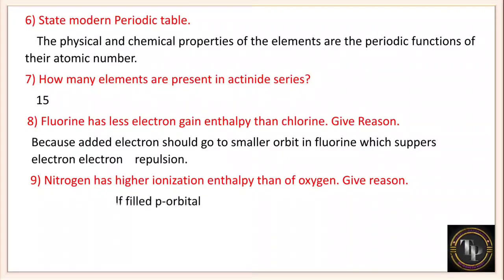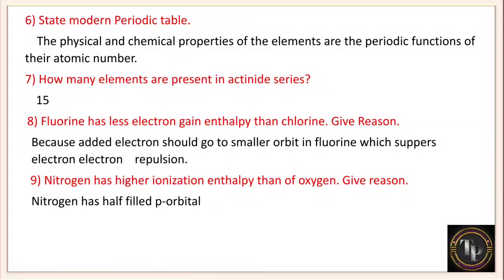Nitrogen has higher ionization enthalpy than oxygen — give reason. Nitrogen has half-filled p orbitals, hence it has higher ionization enthalpy than oxygen. Ionization enthalpy is the energy required to remove an electron from the outermost shell. In nitrogen, px, py, and pz orbitals are each filled with one electron. This half-filled stability means more energy is needed to remove an electron, giving nitrogen higher ionization enthalpy than oxygen.